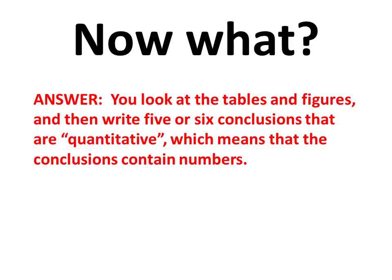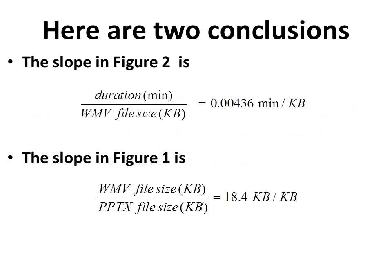We have a table and two figures in our appendix. Now we write conclusions. In this example I only have two, but with most situations you can write five or six quantitative conclusions — and don't write more than five or six, you'll bore the reader. From my two figures, here are two conclusions. These are quantitative: I'm giving you a ratio of two quantities, obtained by calculating the slope in each figure, and here are my quantitative conclusions.